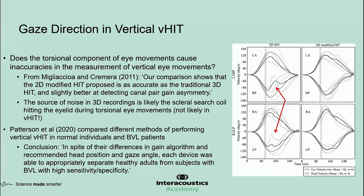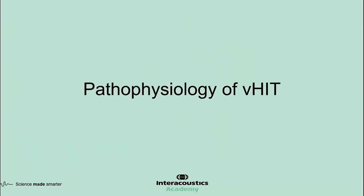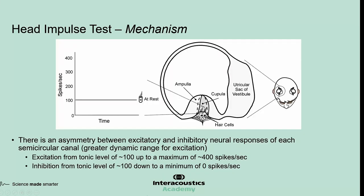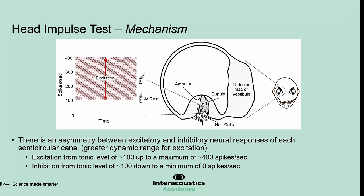Now let's discuss the pathophysiology of video head impulse testing. Let's isolate one semicircular canal — in this case the right lateral canal — and look at its neural activity during head impulses. When the head is at rest, there is a spontaneous neural activity of about 80 to 100 spikes per second, which matches the spontaneous activity of the paired canal on the left. There is an inherent asymmetry between excitatory and inhibitory responses: for excitation, neural activity can go as high as 400 spikes per second, but for inhibitory responses, it can go only down to zero.